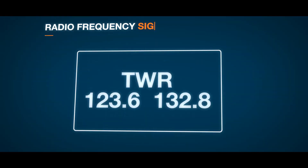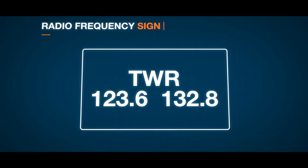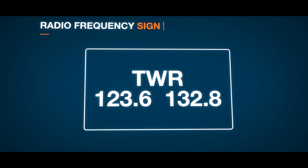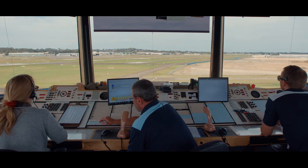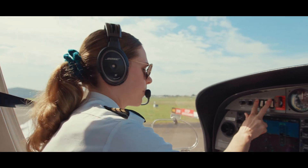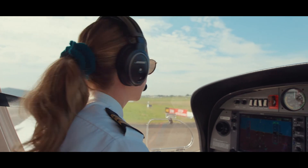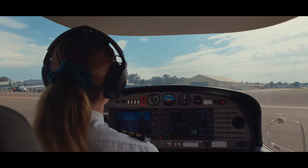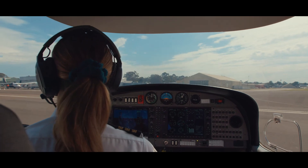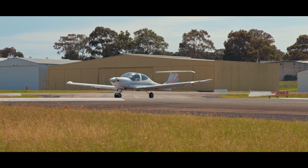Some aerodromes use separate frequencies for different runways — ensure you are on the appropriate frequency for the runway you intend to use. You may be issued an instruction to line up and wait when a take-off clearance cannot immediately be issued. Do not commence your take-off roll until a specific take-off clearance has been issued and you have read it back. Before entering the runway, it's a good idea to scan the full length of the runway and scan for aircraft on final approach or landing roll.